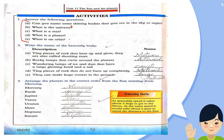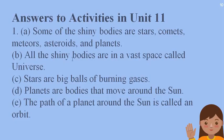Can you name some shining bodies that you see in the sky at night? We have read the chapter and different bodies in it. Some of the shining bodies are: stars, comets, meteors, asteroids, and planets. These are some bodies that we see in the sky at night.